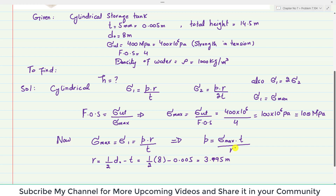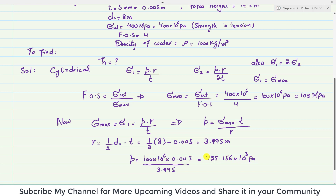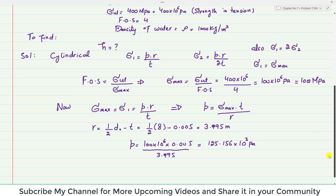Substituting the values: P = σ_max × t / R = 100 × 10⁶ × 0.005 / 3.995. From this calculation we get the pressure P = 125,156 Pa ≈ 125.156 × 10³ Pa.